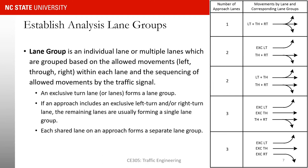Looking at this diagram: if I have a shared lane used for left turn, through, and right, that is one lane group. If I have an exclusive left turn lane and a lane used for through and right, I have two lane groups. For this example with an exclusive left turn lane — that's a lane group by itself; an exclusive through lane — that's a lane group; and a shared through and right — that's another lane group.